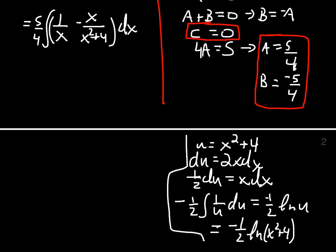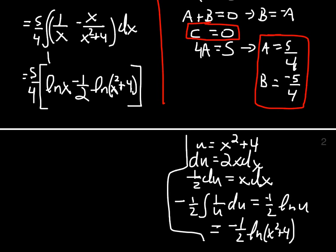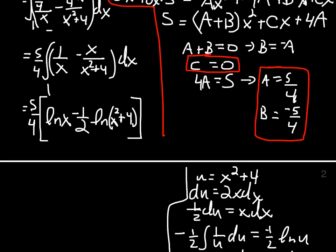So we're going to have 5 fourths the natural log of x minus 1 half the natural log of x squared plus 4, evaluate it from 1 to 2.